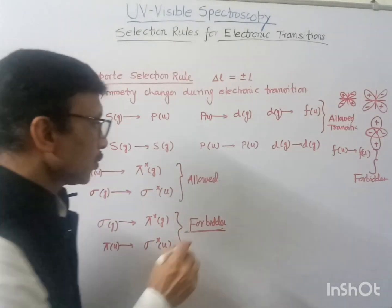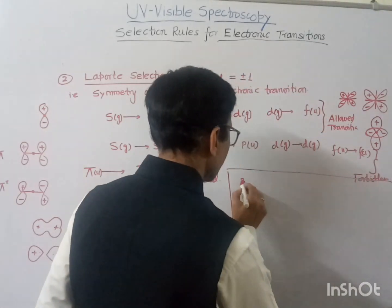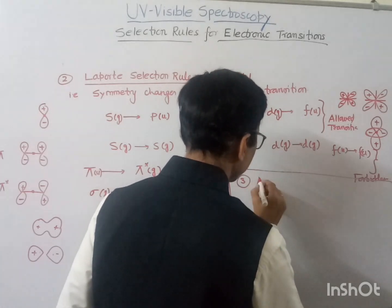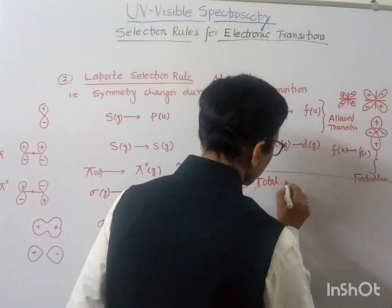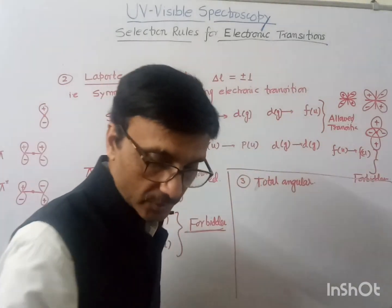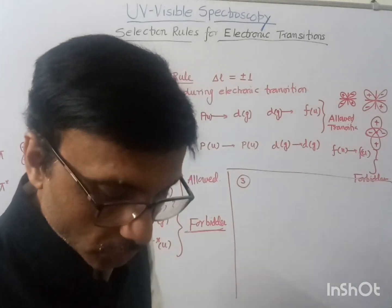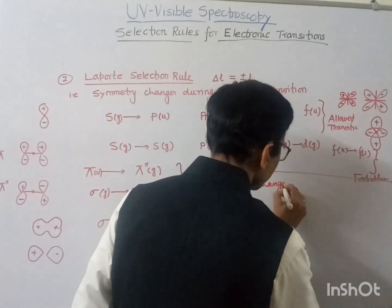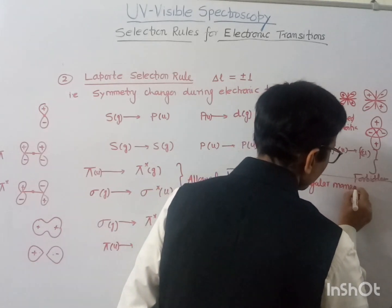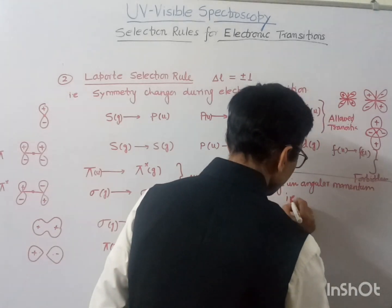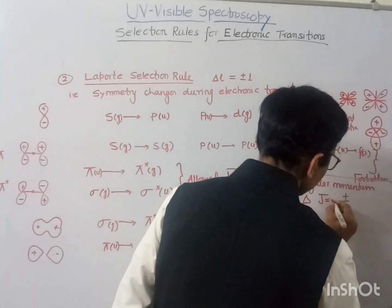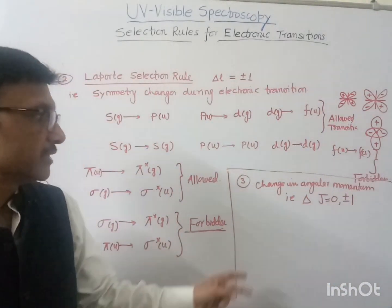The third selection rule involves total angular momentum. According to this rule, the change in angular momentum, delta J, should equal zero or plus or minus 1 during the electronic transition. This J equals L minus S.